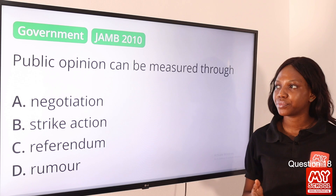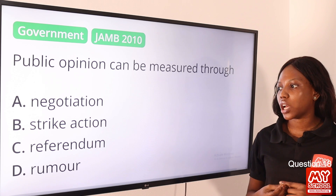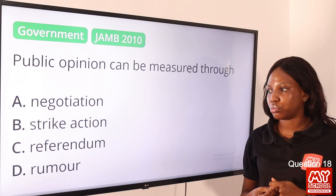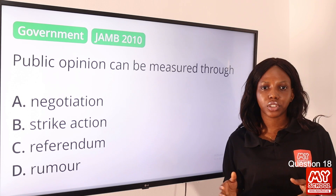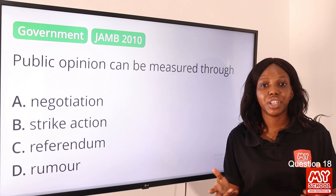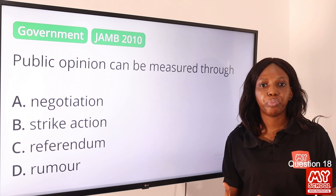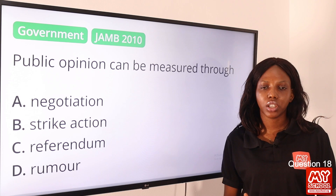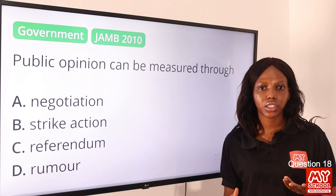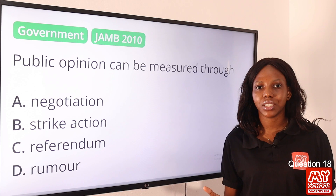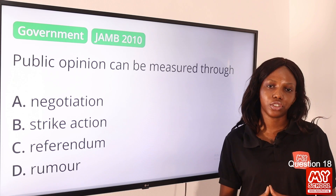Question 18: Public opinion can be measured through — option A, negotiation; option B, strike action; option C, referendum; option D, rumor. The answer is referendum. Referendum is synonymous with a public vote. A political question is put to the public — people are asked questions and their responses gathered, getting their opinion directly. There is a general vote and we get to know people's preferences and choices. So option C is the final answer.